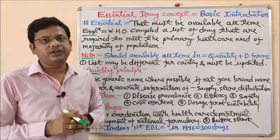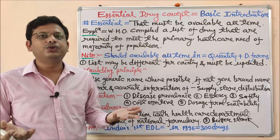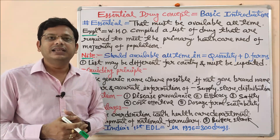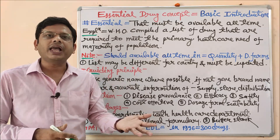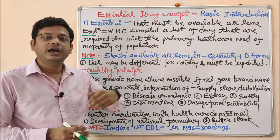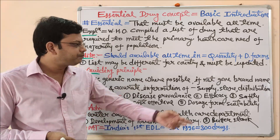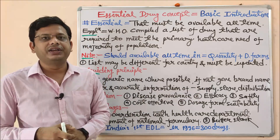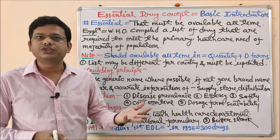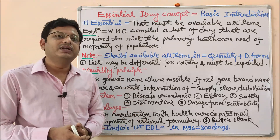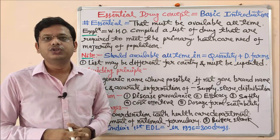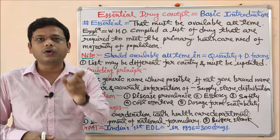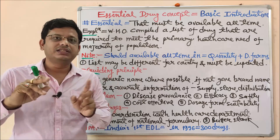Next is efficacy — is that particular drug effective? If the drug is not effective, there is no need to keep it in the list; it should be revised accordingly. If a new drug is found to be more effective than the previous one, replace it. Next is safety — efficacy and safety are two sides of a coin. If a drug is effective but not safe, it should not be used. The drug must be suitable for the particular age group of patients, and if not, an alternative must be considered.